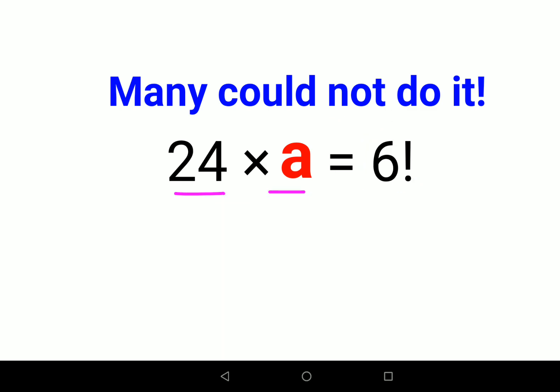Now please understand, in these kind of scenarios what you should be doing is we will try to put everything in terms of numbers. So we have 24 into a, and what is your 6 factorial? That is nothing but 6 into 5 into 4 into 3 into 2 into 1.